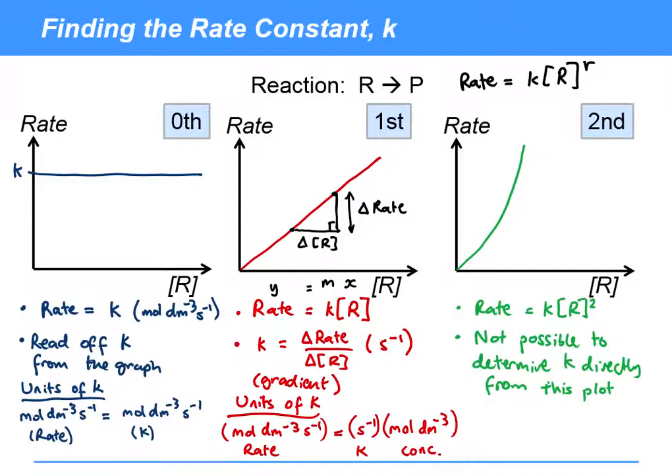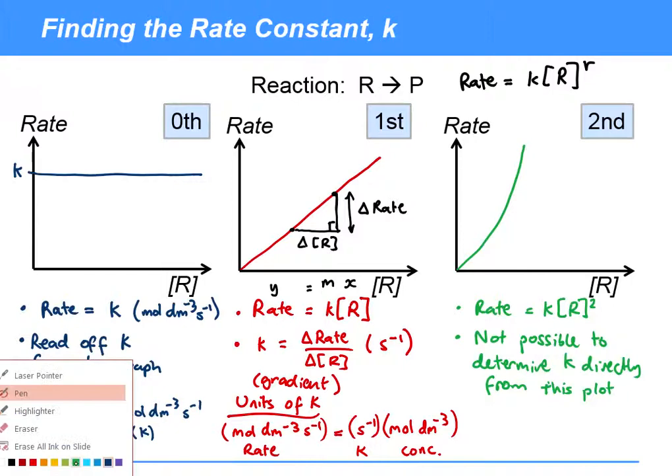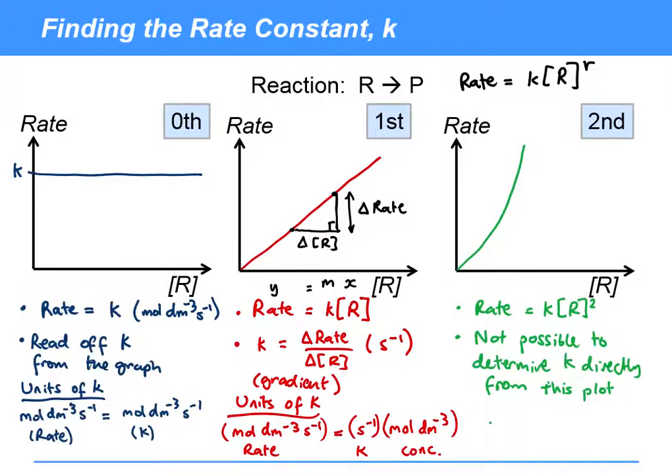A little bit more challenging now—try and see if you can do it for second order. Okay, let's see how you got on. In this case it's a little bit more complicated. For units, you've got to have moles per decimetre to the minus three per second for rate. For concentration squared, that's just going to be the squaring of this, so we're going to have mole squared.